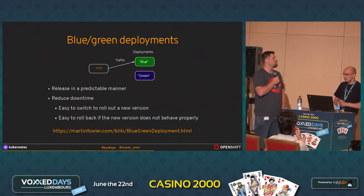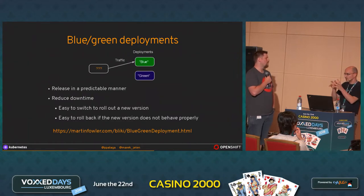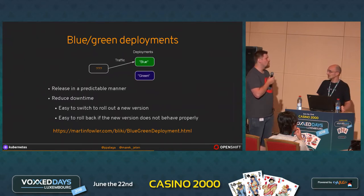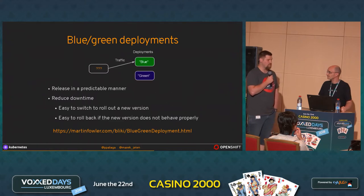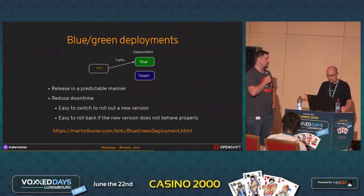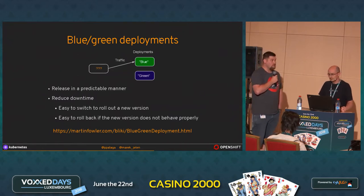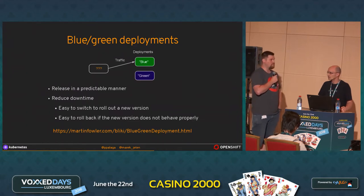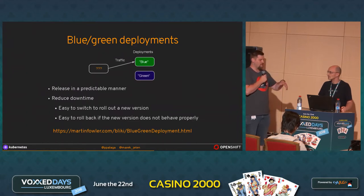The switch is important. Which concept, which object of the cluster takes care of this? We have used something called a route, and the route is responsible for changing the destination where requests are going. Is this an OpenShift-specific concept? Well, route is OpenShift-specific. In Kubernetes, you have Ingress. But this functionality is in both Ingress and route, so you can use it on Kubernetes and OpenShift as well.